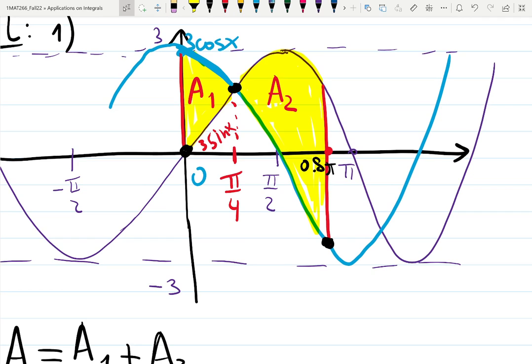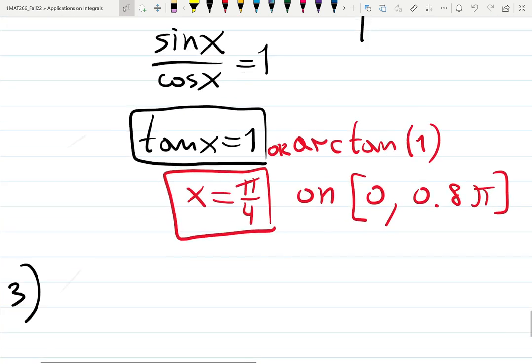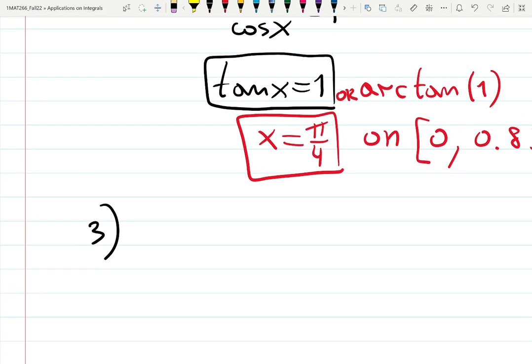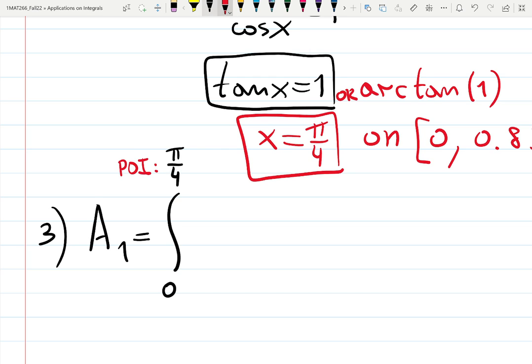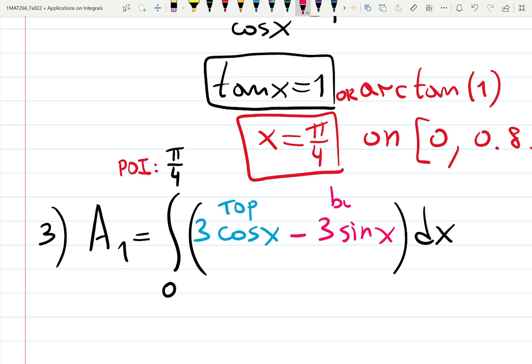Are we ready to write down first integral? Everything is here. Everything is ready. Keep staring at the picture and tell me what is A1. Integral from what to what? 0 to pi over 4 because that's my point of intersection. And then function at the top was 3 cosine x minus pink function at the bottom was 3 sine x dx. The integral is pretty straightforward, which is good news. In this chapter, we don't give you hard integrals because we want you to practice to create the integral, which is more important in this case than actually solving it.